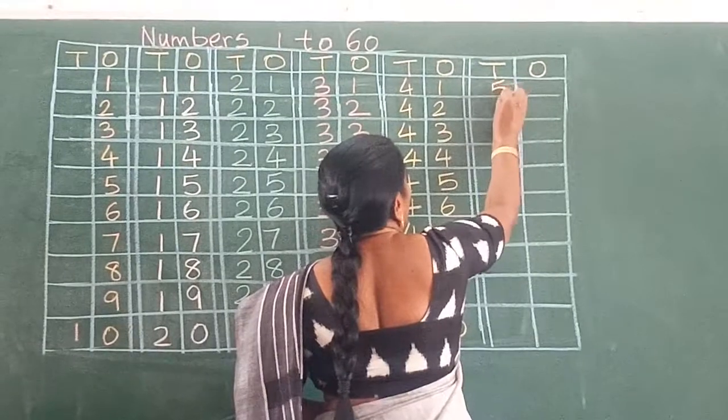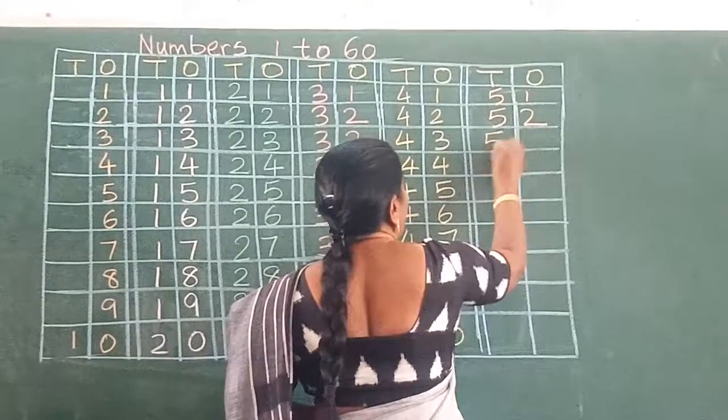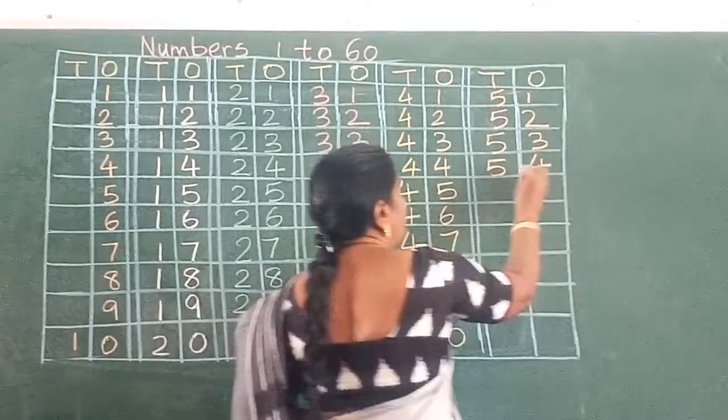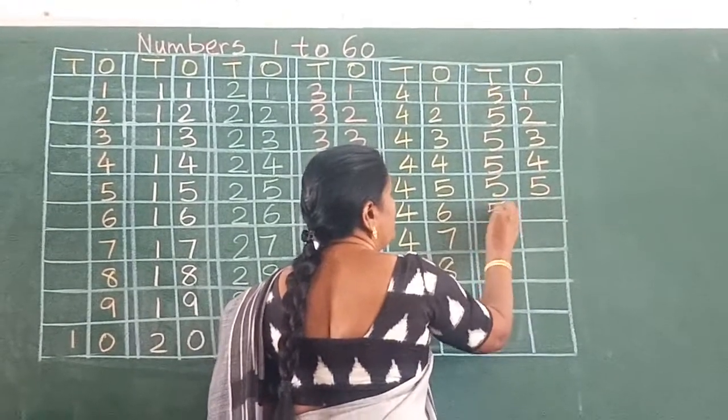5, 1, 51. 5, 2, 52. 5, 3, 53. 5, 4, 54. 5, 5, 55.